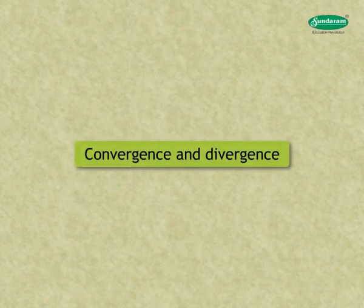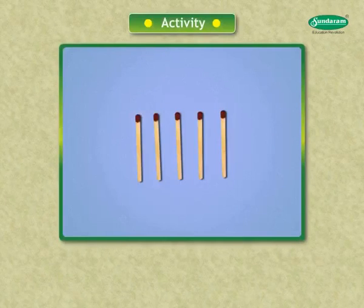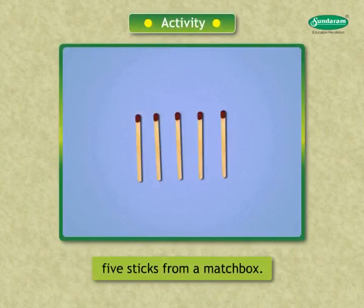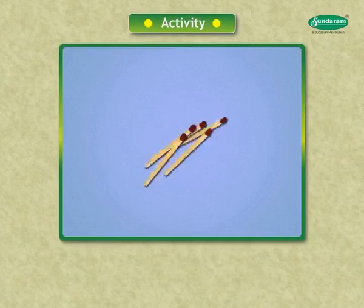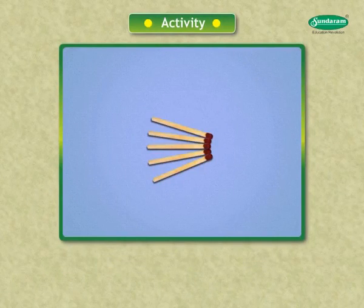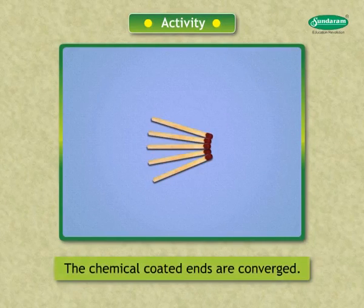Let us look at the concepts of convergence and divergence. Activity: Take five sticks from a matchbox and arrange the sticks in such a way that their chemical coated ends are meeting at a point. Here, the chemical coated ends are converged.